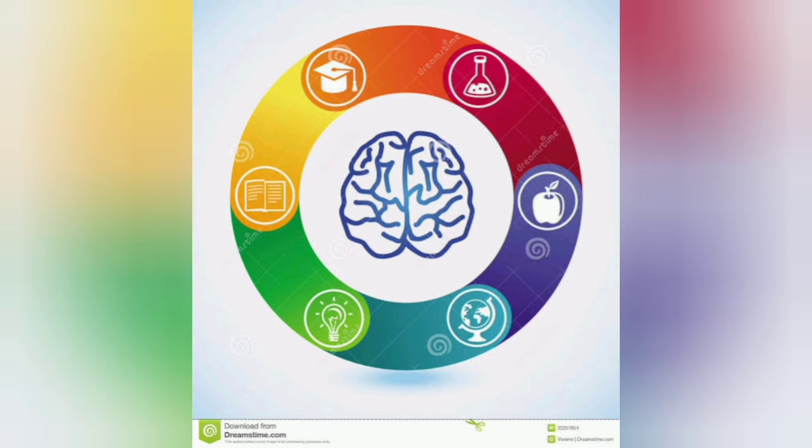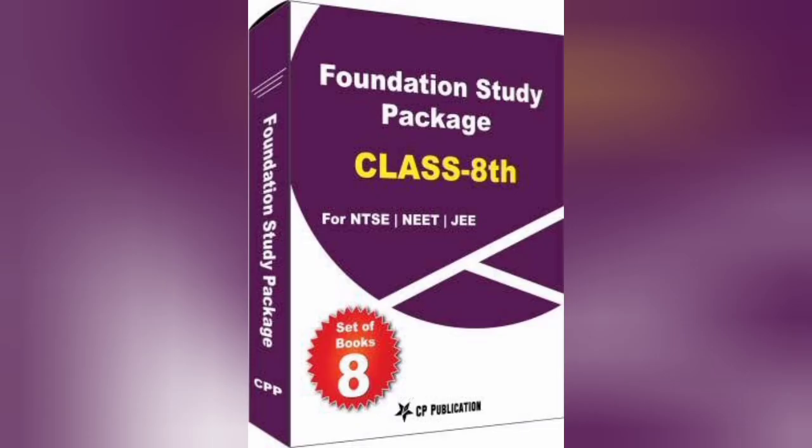How can we improve our mental ability? For that, we have to do different types of reasoning — different types of reasoning sums and different types of mathematical aptitude. That will help us to develop our mental ability. We can solve different types of mathematical reasoning papers and books as well.